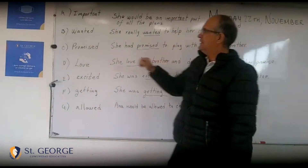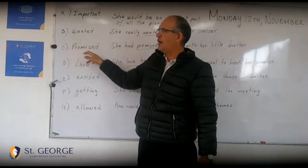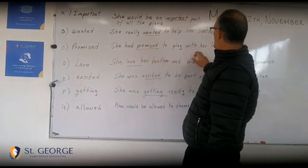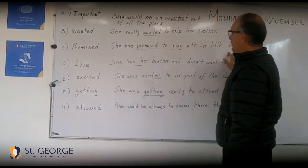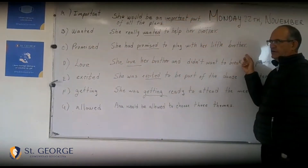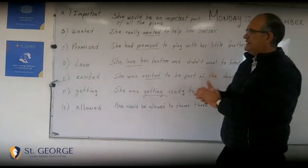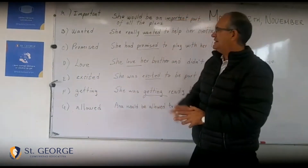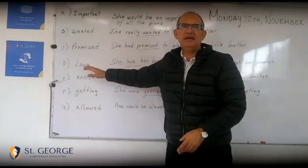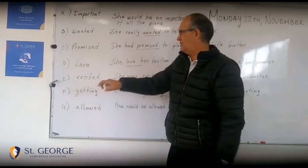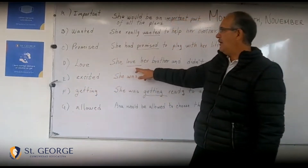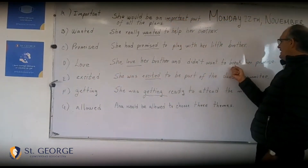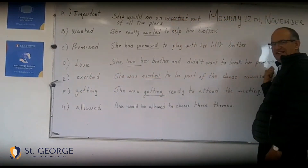Very good. The next one is 'promise': 'She had promised to play with her little brother.' Next, the verb is 'love,' and this is how you can make a sentence out of this verb: 'She loved her brother and didn't want to break her promise.'